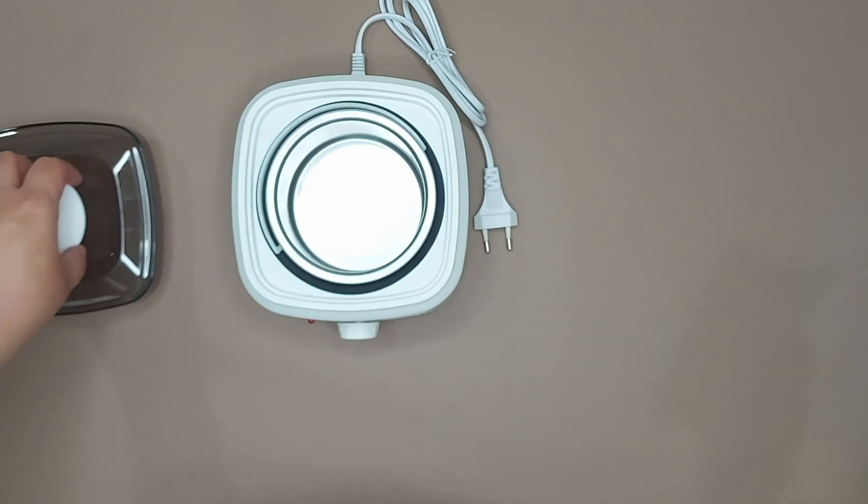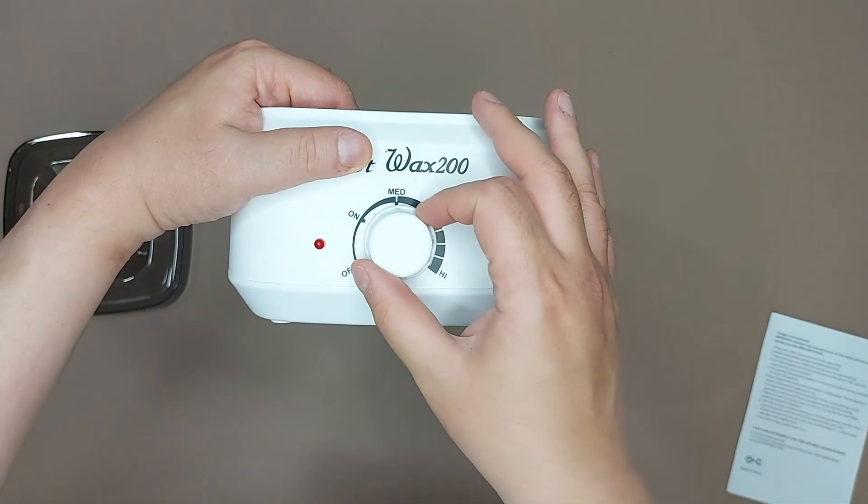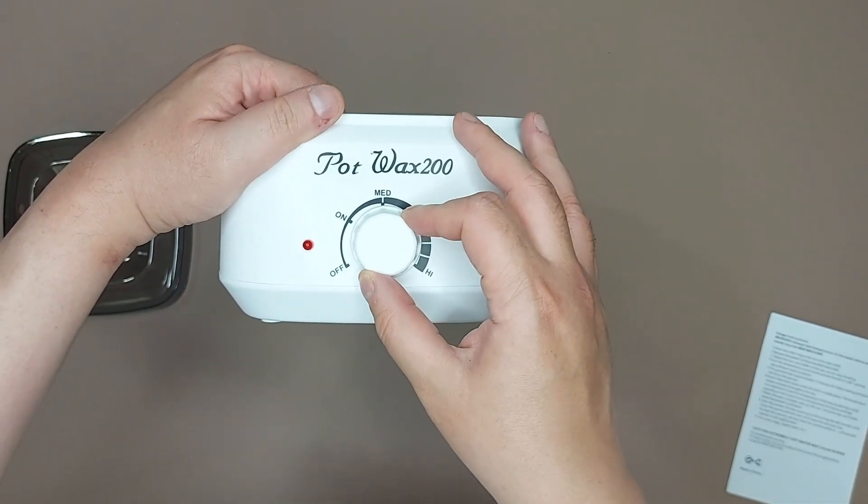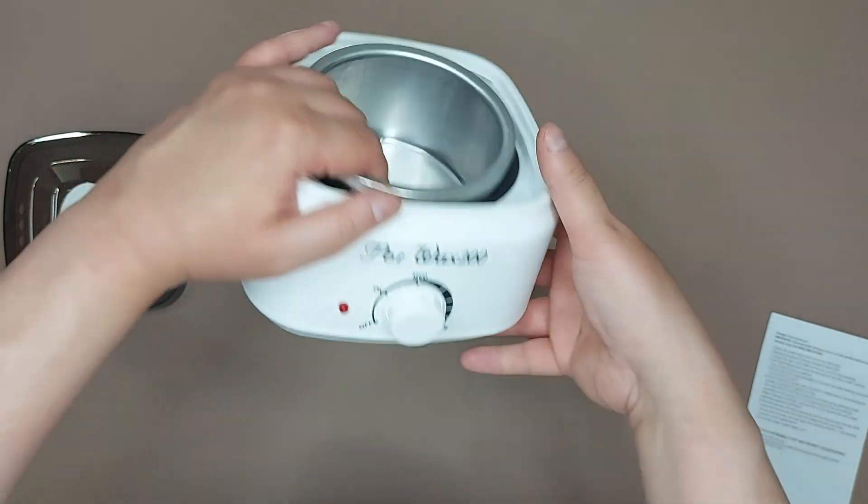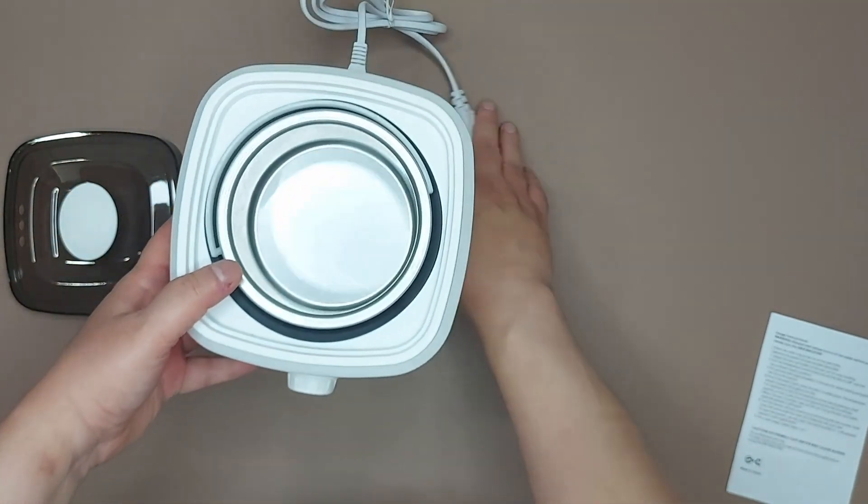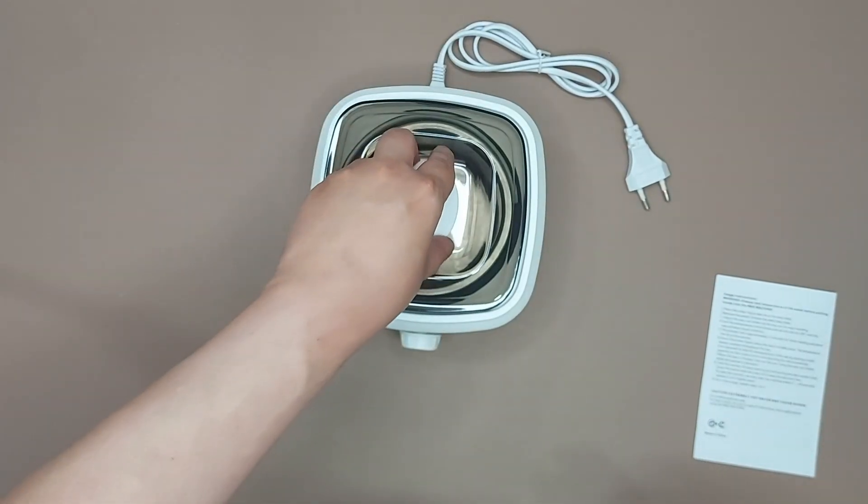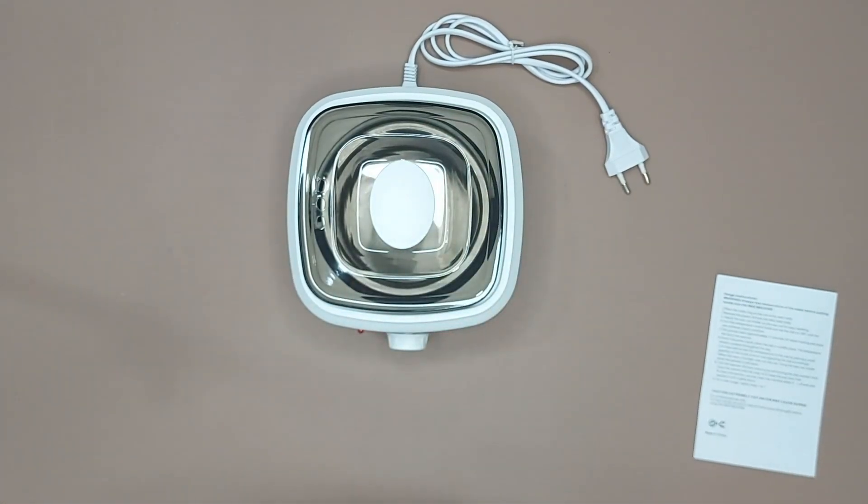And once it melts, when you want to use it, turn it to medium to keep the wax warm while you use it. And if you cover it, you can keep it clear from any kind of dust.